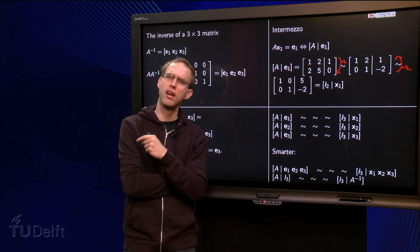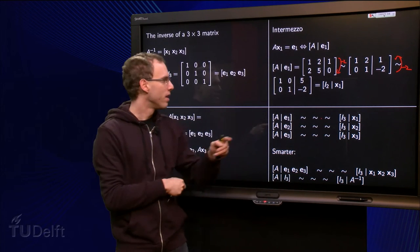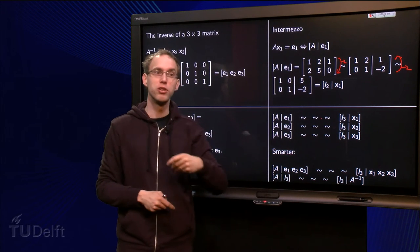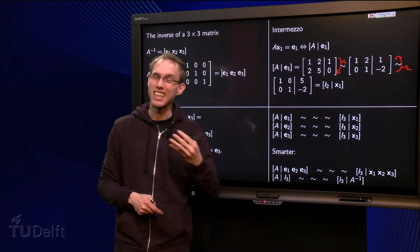But wait a minute, can't we do this a bit smarter? You are doing row reductions, but you are always reducing the same matrix A.